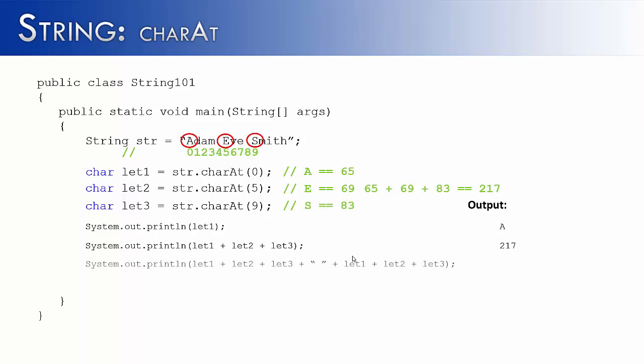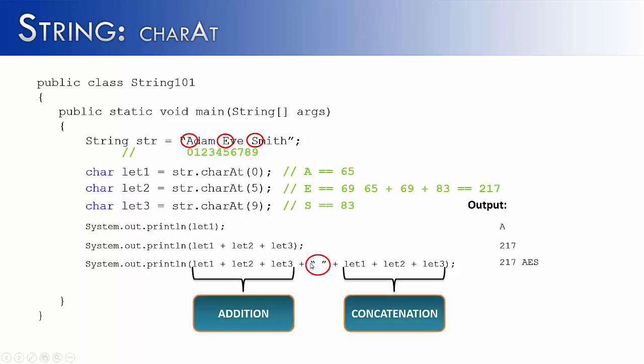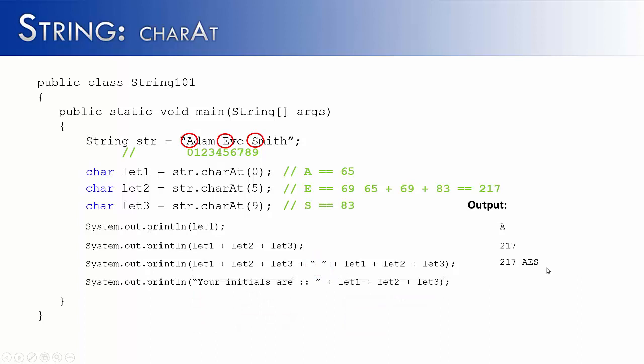So how do we work around this? Watch what happens when I run this line of code. I get 217, and then I get AES. And the difference is there's a string before this addition, and there's not a string before this right here. What you should know is that if you're adding characters together, it's going to give you a number. But if you have a string, like we do here, followed by characters, it's going to give us the character values A, E, and S. So then we can print a line like this that says your initials are, there's a string starting, so you can probably guess what it's going to print out. Your initials are A, E, S.